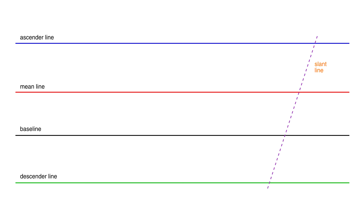The baseline is where the body of the character rests. Up from that, we have the mean line, which most define as the height of the body of a small letter, traditionally the letter X. Because of this, the space between the baseline and the mean line is commonly called the X-height.